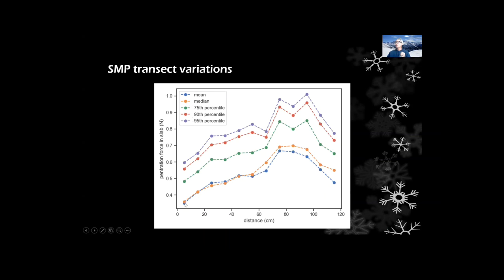Let's take a look at this orange line here. The orange line is the median penetration resistance. We can see that it ranges from down here around 0.35, goes up to about 0.6 and back down.